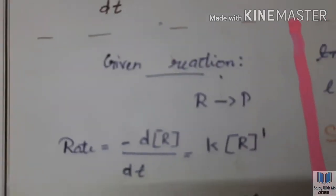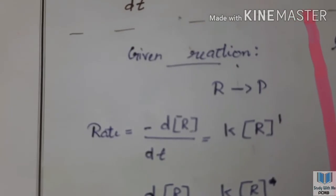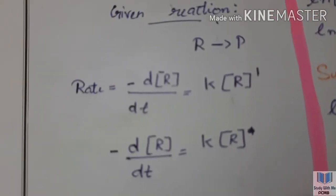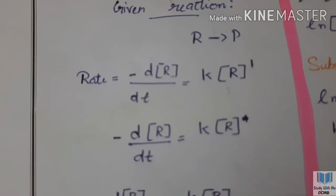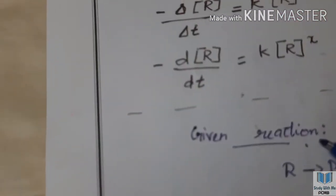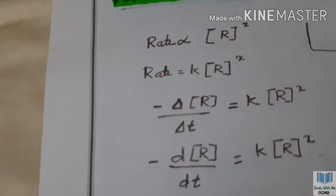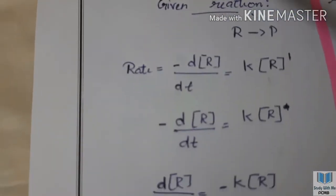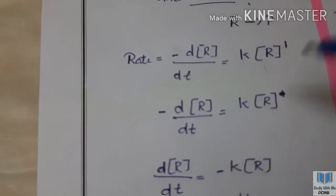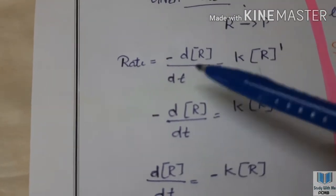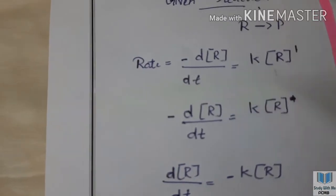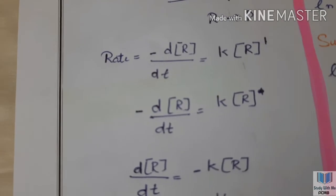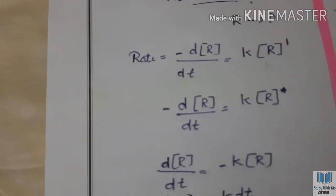The reaction is R gives P — R is the reactant, P is the product. Now write the equation. The equation is: rate equals minus d[R]/dt equals k times concentration of R raised to 1. This is the first-order.